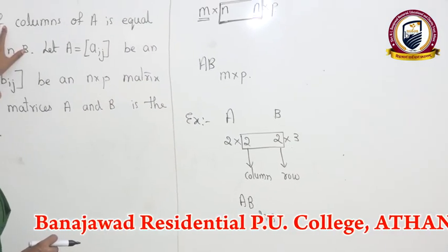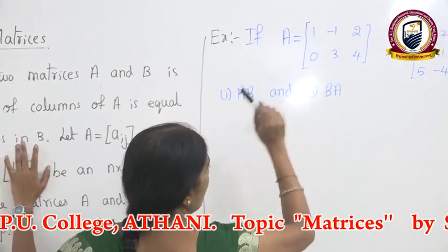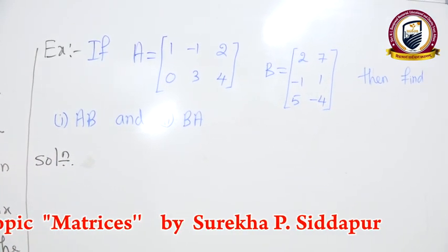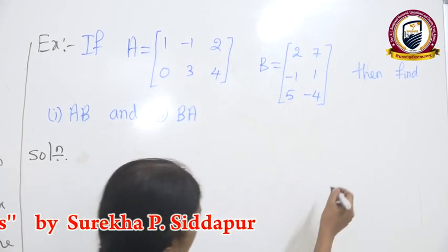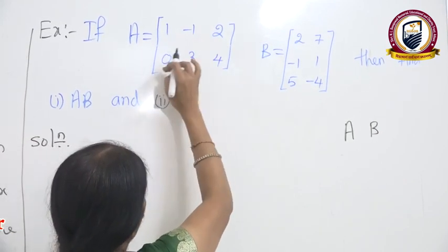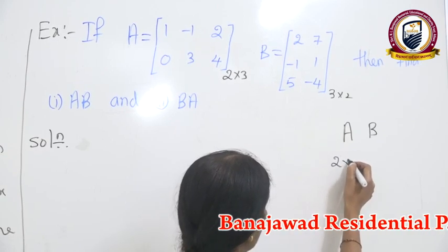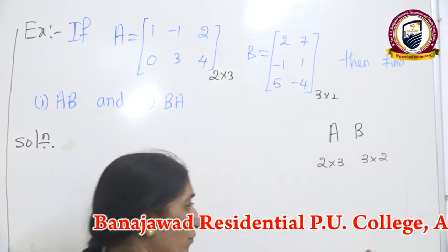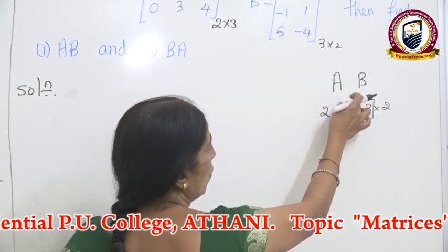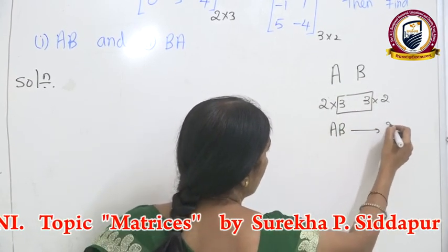Before going to the definition, I will explain the examples first. Two matrices are given. Before multiplication, we have to check whether the multiplication is possible. For that, write A and B side by side and write their orders. Matrix A has order 2 by 3 and matrix B has order 3 by 2. See these adjacent numbers — 3 and 3. If they are equal, meaning the number of columns of A equals the number of rows of B, you can multiply A and B. The resulting matrix has order 2 by 2.